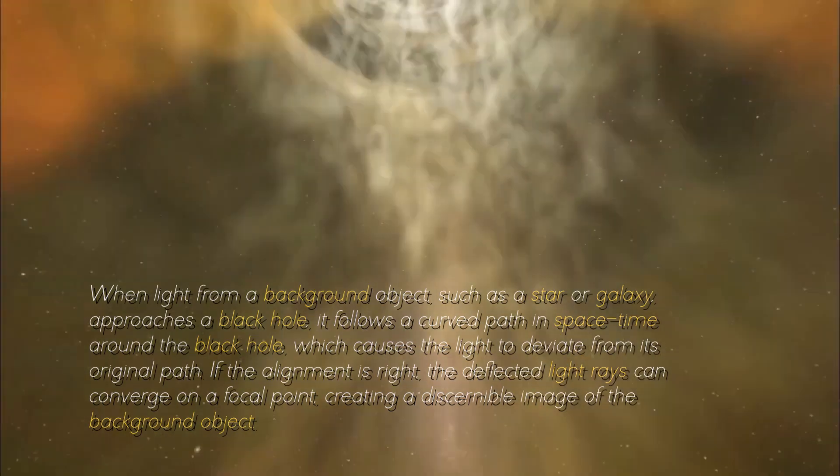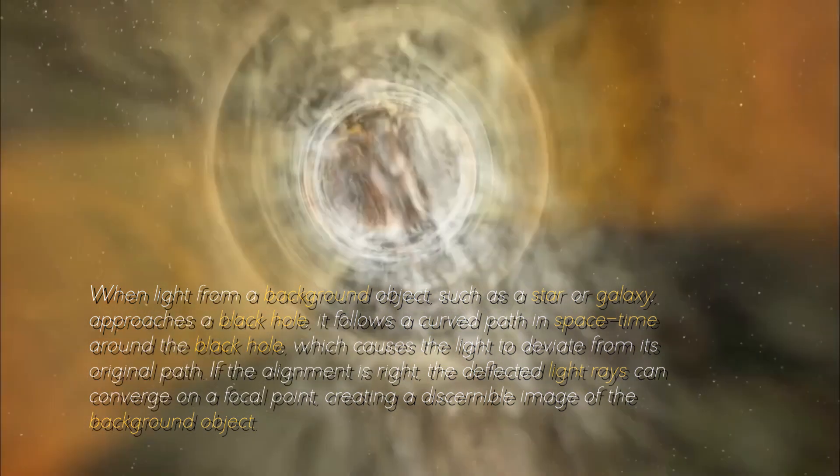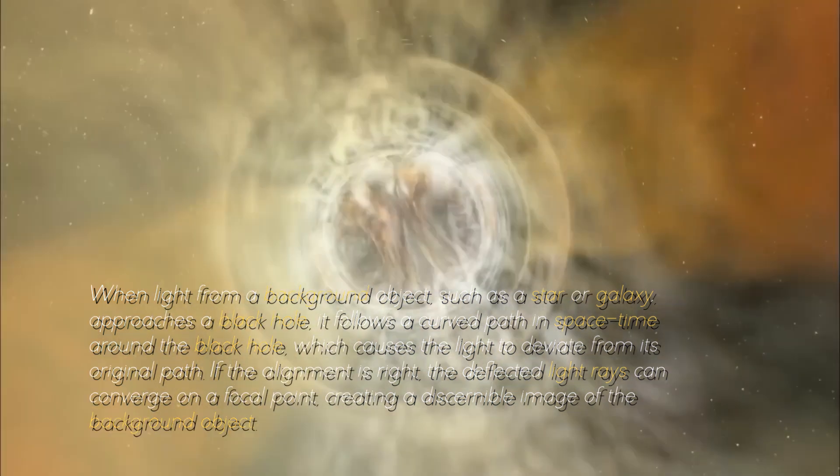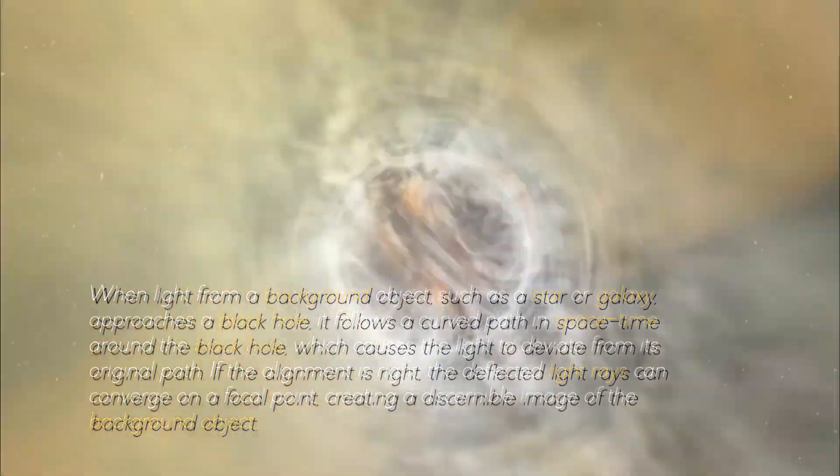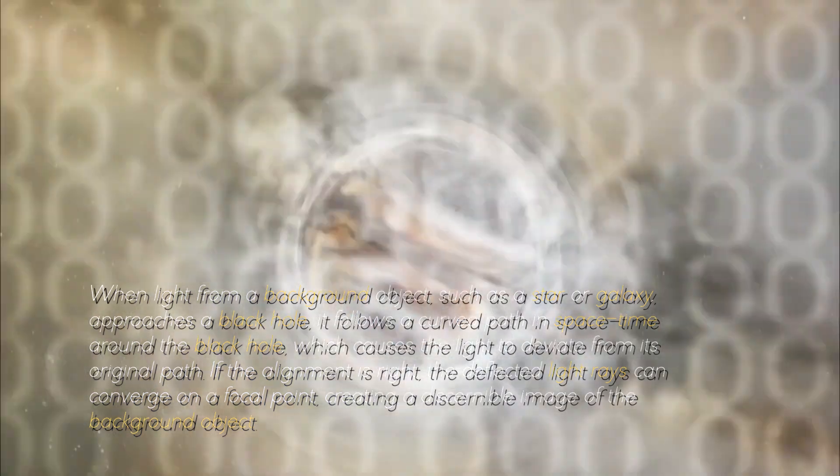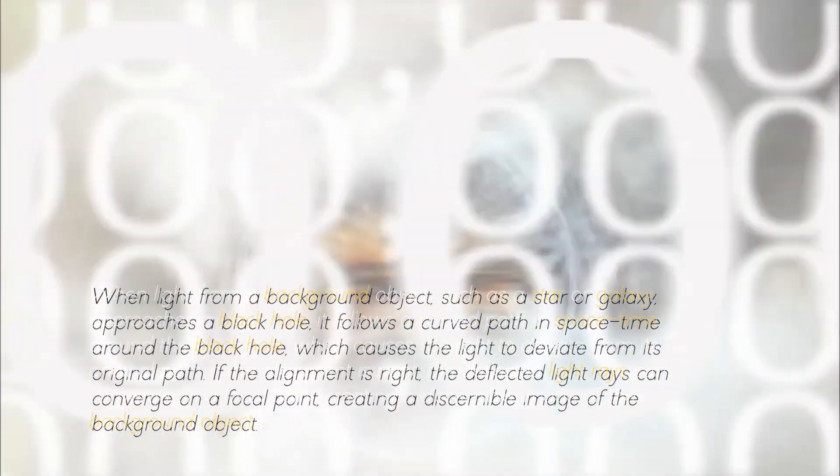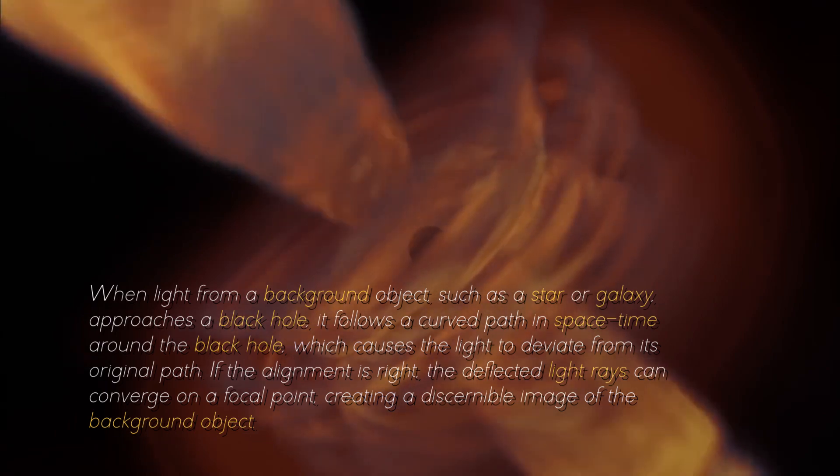When light from a background object, such as a star or a galaxy, approaches a black hole, it follows a curved path in spacetime around the black hole, which causes the light to deviate from its original path. If the alignment is right, the deflected light rays can converge on a focal point, creating a discernible image of the background object.